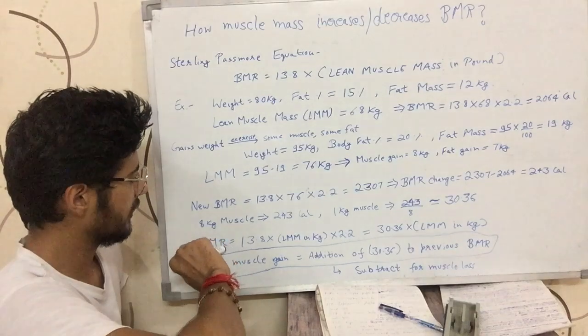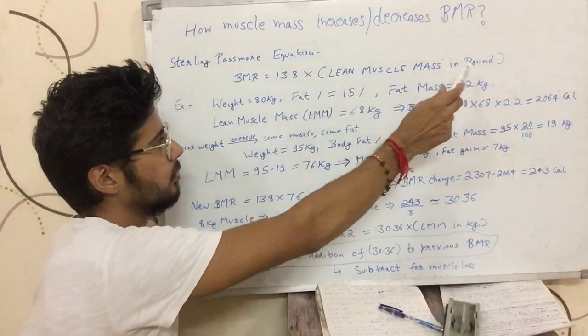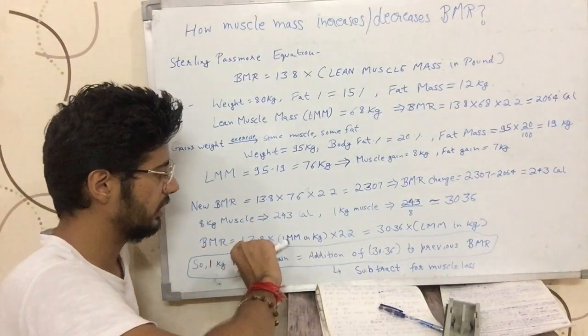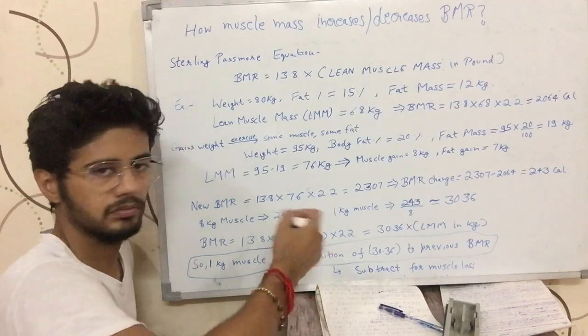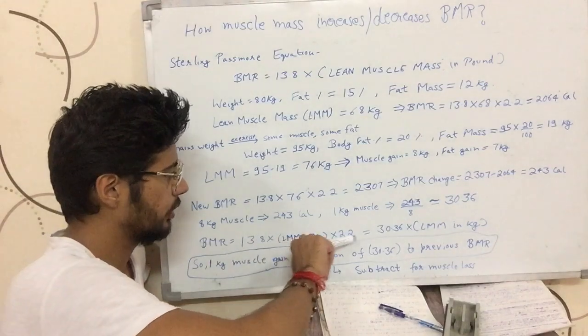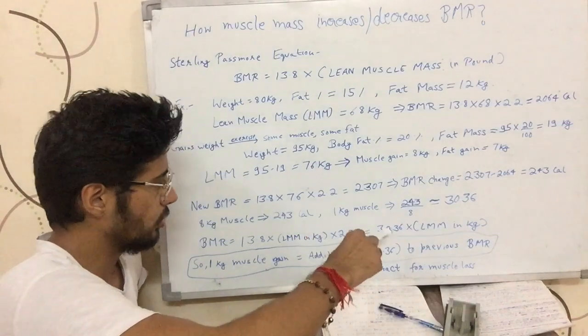BMR has this formula: 13.8 into lean muscle mass in pounds. Now, this is like 13.8 into lean muscle mass in kgs into 2.2. Multiplying 13.8 by 2.2 gives 30.36 into lean muscle mass in kgs.